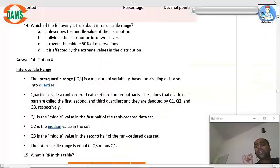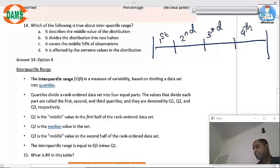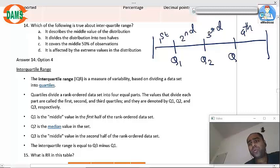Which of the following is true about interquartile range? Now let us understand. First part, second part, third part, fourth part. As you can see over here, this is a quartile, a normal quartile where all the four parts are equal. Q1, Q2, Q3.